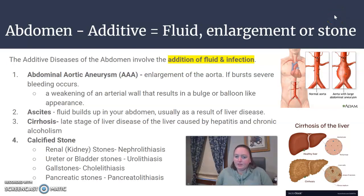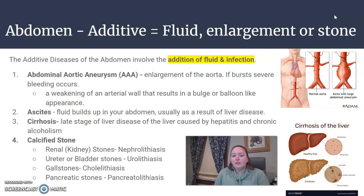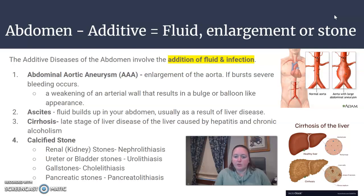We're back with abdomen diseases, starting with additive diseases for the abdomen. These include the addition of fluid, an enlargement, the addition of a stone, or possibly infection.